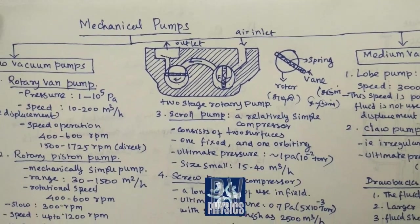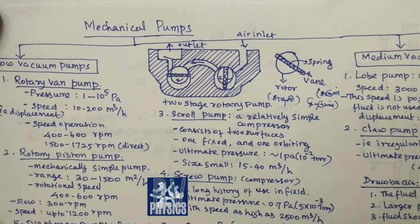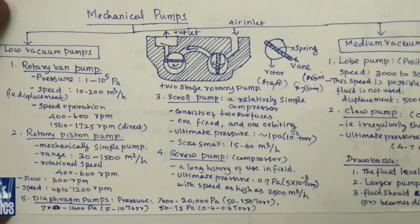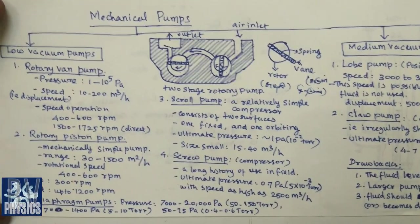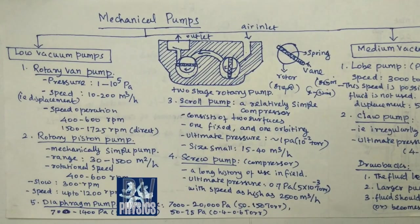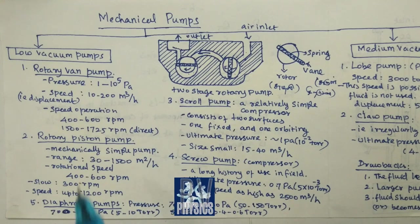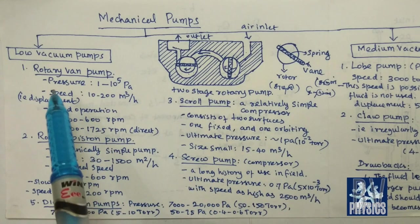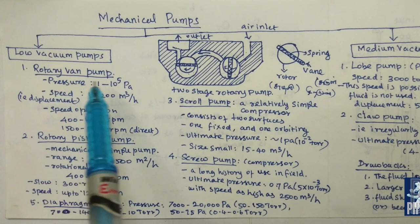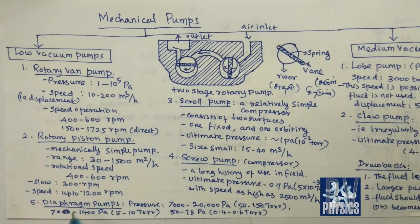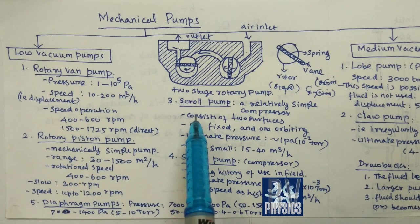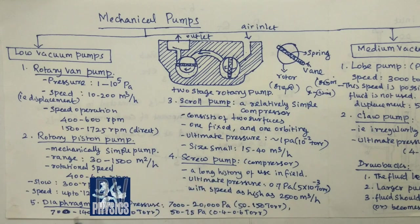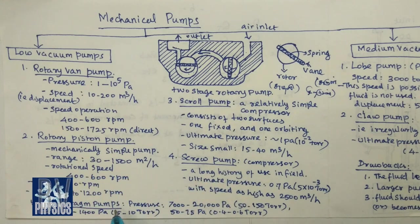We will see how many types are in the range. Low vacuum pump has five types: rotary vane pump, rotary piston pump, scroll pump, screw pump, and diaphragm pump.